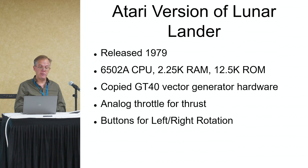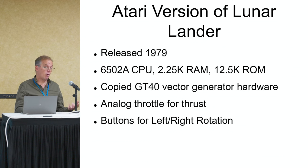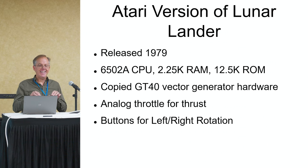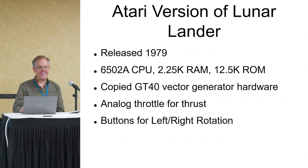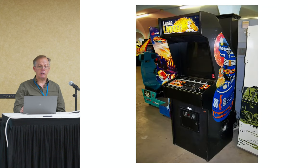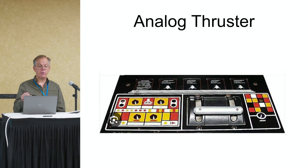Atari saw this and basically six years later they took the same hardware — a digital vector generator — cost-reduced it, used a simpler CPU, and released an arcade game that kept score and had lives. The original game has no scoring; it just keeps replaying. If you crash, it gives you another ship forever. Although I found out last night that if you let the game run for hours and hours, eventually it'll run out of memory because it keeps storing all the crashes on the moon. Atari's game has score, a number of lives, and different mechanisms for controlling the lunar lander. They used a thruster rather than a light pen, and buttons to rotate left and right.